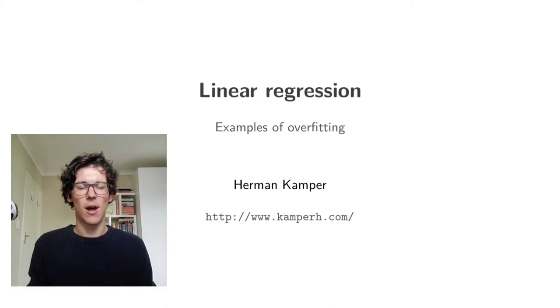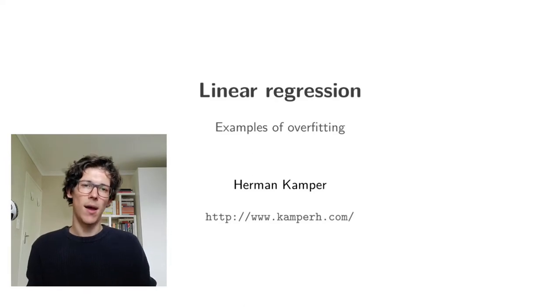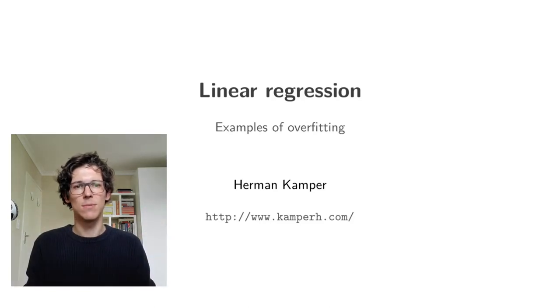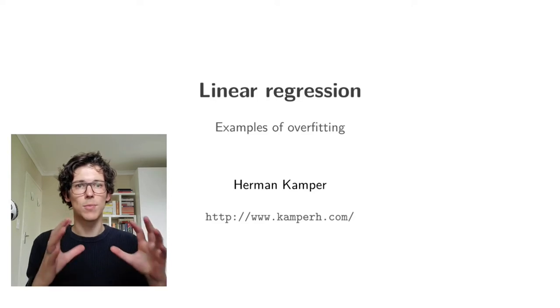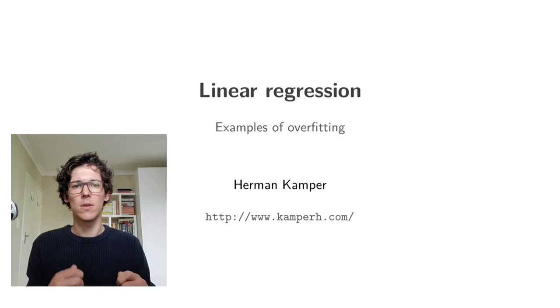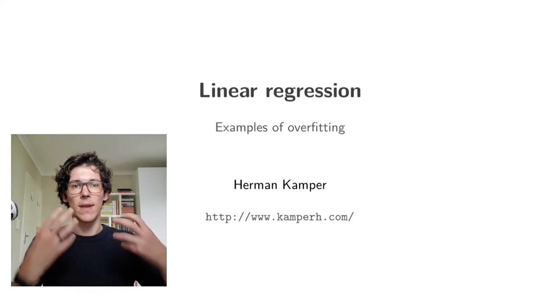In the previous video we saw how we can make a model more complex, for instance by making it a higher order polynomial or adding more radial basis functions. Although those more complex models seem to fit the training data a lot better, in some cases almost perfectly, intuitively it does seem that they won't generalize that well to unseen data points or points that weren't in the data in which we trained the model.